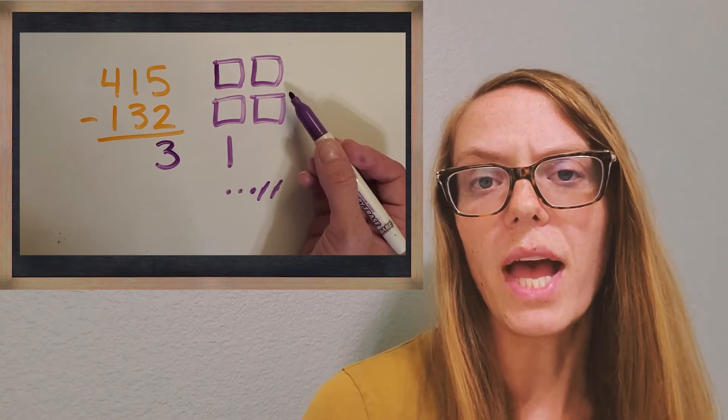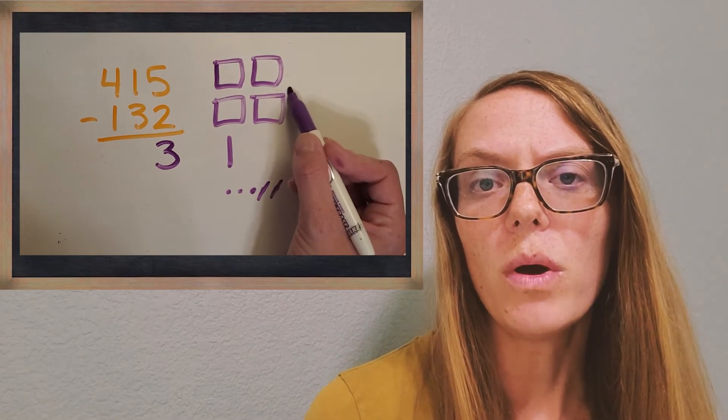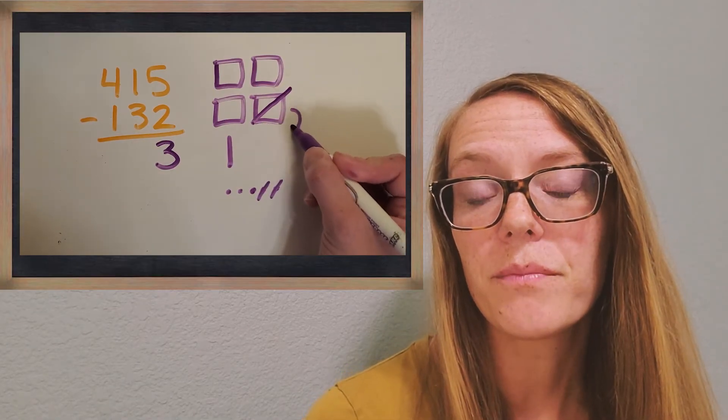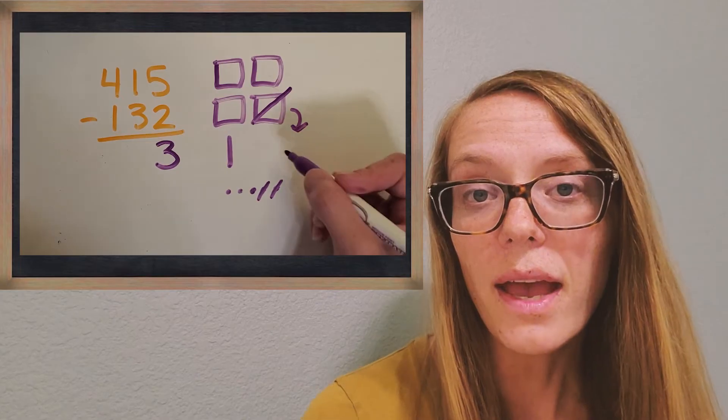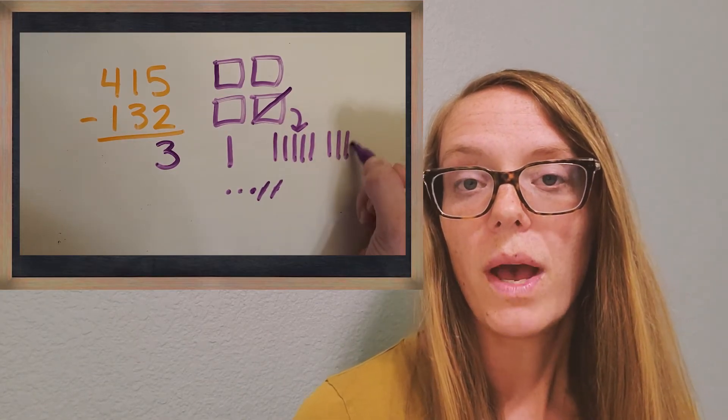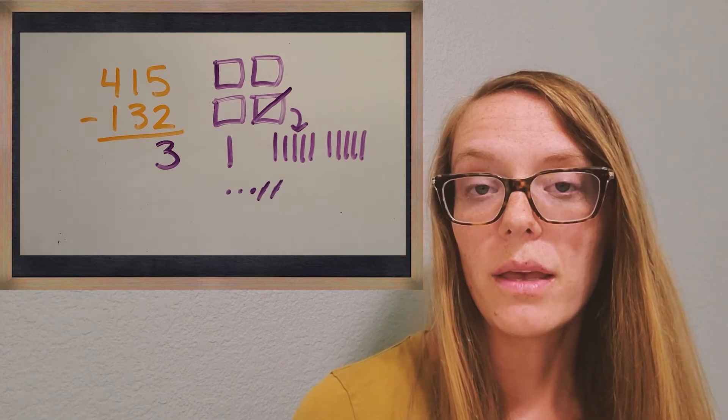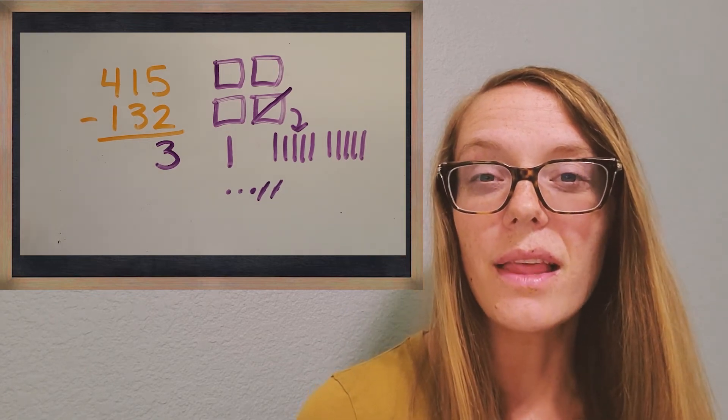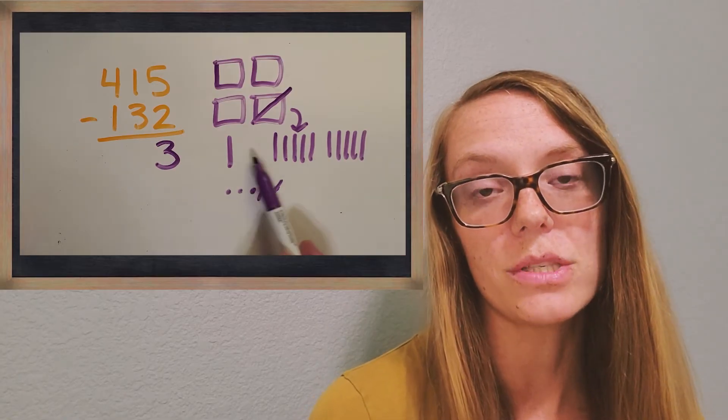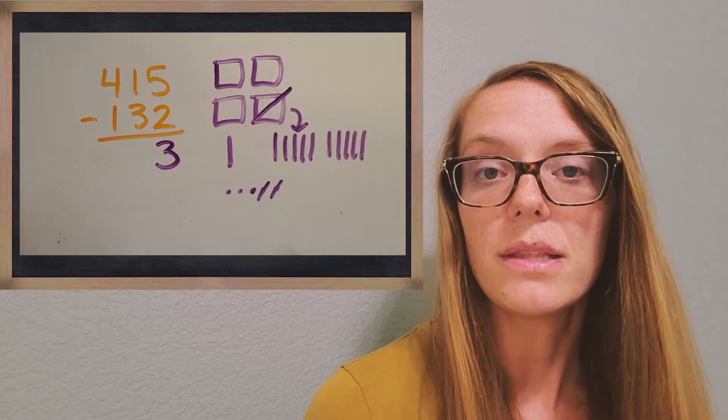So let's look over at those flats. If I took one of them, what can I break it up into that might help? Yeah, I can break it up into 10 longs. So I'm going to make that trade really quick. Now I've got 11 longs. I can definitely take away 3. So it helps me because then I can subtract.